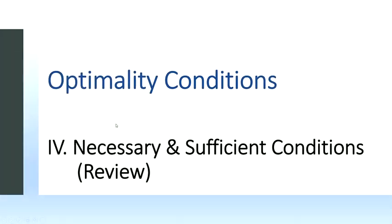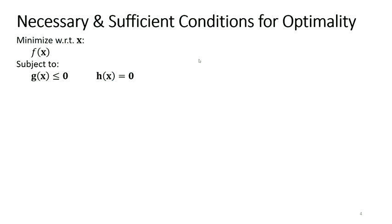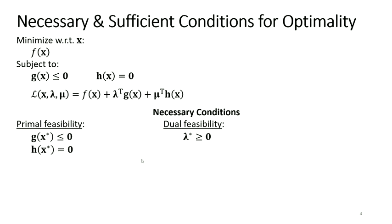So what are the necessary and sufficient conditions for optimality? This is the constrained optimum problem: minimize with respect to f of x subject to inequality constraints and equality constraints. We construct the Lagrangian, which is a function of x, lambda, and mu — f of x plus lambda transpose g of x plus mu transpose h of x — with lambda being greater than or equal to zero.